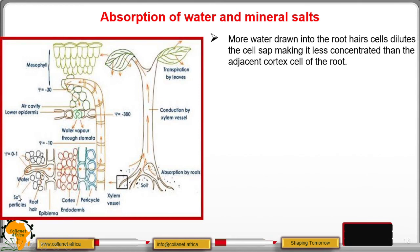The soil particles contain a higher concentration of water molecules than the cell sap, so a concentration gradient exists. Pressure is exerted to force water to enter the sap vacuole. Water then keeps on moving to the cortex or adjacent cells up to the xylem vessels in the stem, to be transported to the leaves where it is lost through transpiration. As transpiration goes on, more water is absorbed from the soil to replace the lost water.